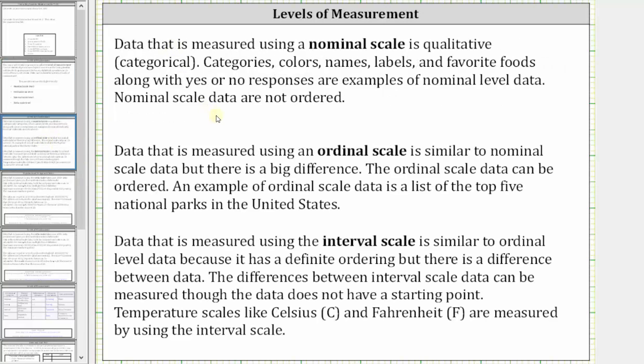Data that is measured using a nominal scale is qualitative or categorical. Categories, colors, names, labels, and favorite foods along with yes or no responses are examples of nominal level data. Nominal scale data are not ordered.